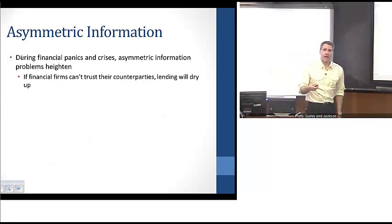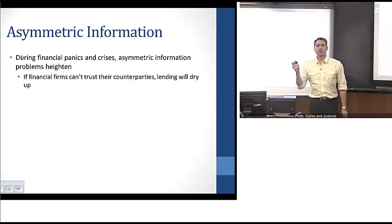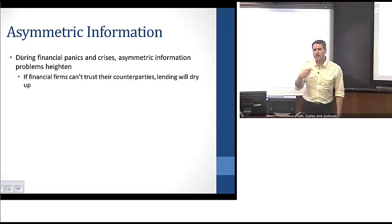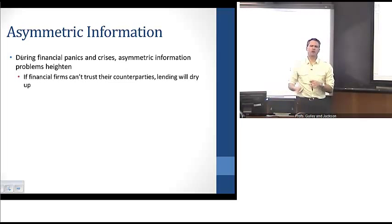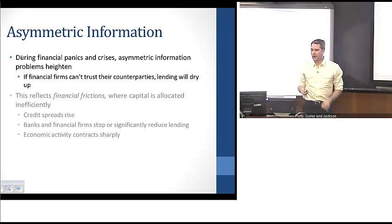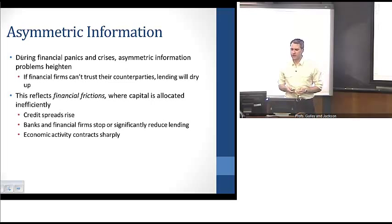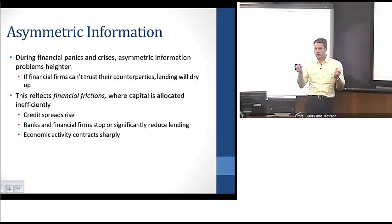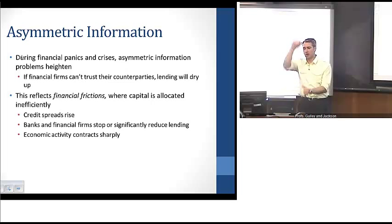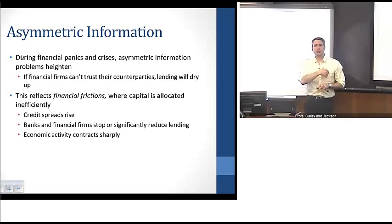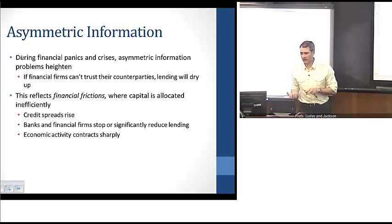During financial panics and crises, these asymmetric information problems heighten and sharpen dramatically. If these problems occur, borrowers don't know much about lenders, and lenders can't know much about borrowers. As a result, lending often dries up, reflecting financial frictions in financial markets. When we have financial frictions, capital is allocated very inefficiently. A symptom of these financial frictions is that credit spreads rise — the difference between market interest rates and safe interest rates becomes much more dramatic — and banks and financial firms stop or significantly slow their lending, causing economic activity to contract sharply.